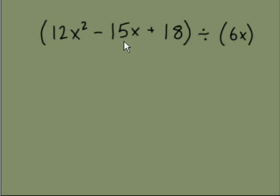We are dividing this polynomial, these three terms, 12x squared minus 15x plus 18, divided by 6x. So we've got here just one term, a monomial. No adds, no subtracts, just a 6x.